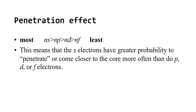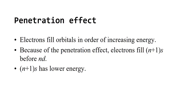Most penetration is seen in S subshell, then P, then D, then F — consistent with what we already know. S electrons have a greater probability of penetrating close to the core more often than P, D, or F electrons do. Because of the penetration effect, electrons fill the N+1 S orbitals before N D orbitals. This is why 4S precedes 3D and why 6S and 5S precede 4F — it explains the filling patterns.